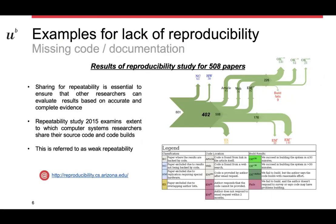We now look at two examples where there were systematic studies of reproducibility. First, we start with a topic where you might think it's very easy to reproduce results, and this is computer science. This is a study on reproducibility of building computer code on specific operating systems. They first checked for 580 papers whether they could obtain the code and then whether they could build it — not a very high requirement. But still, as you can see, it failed in many cases.